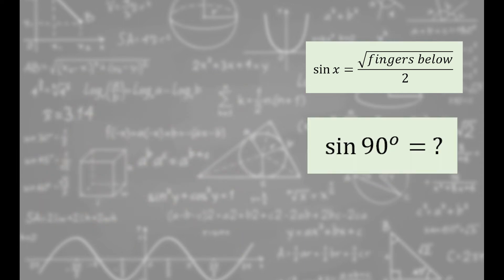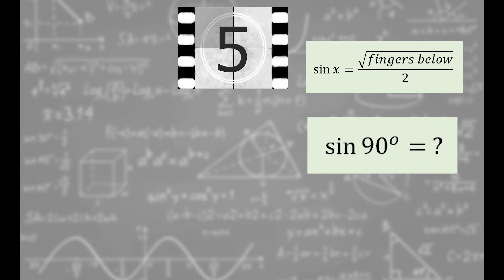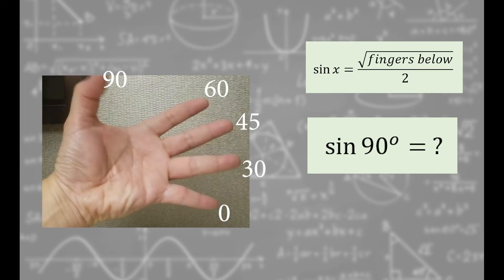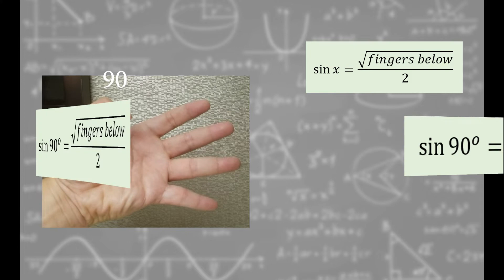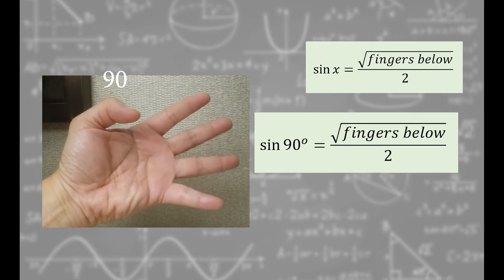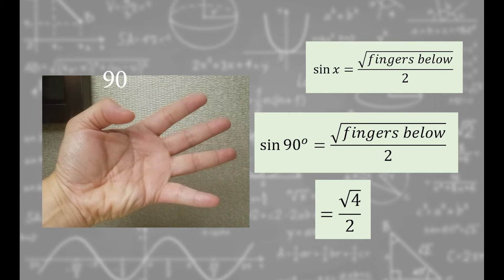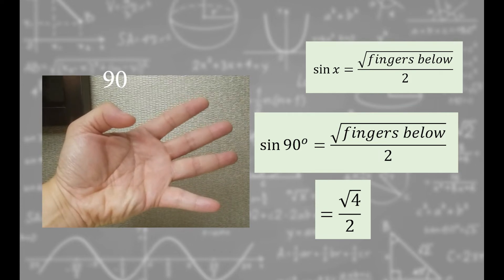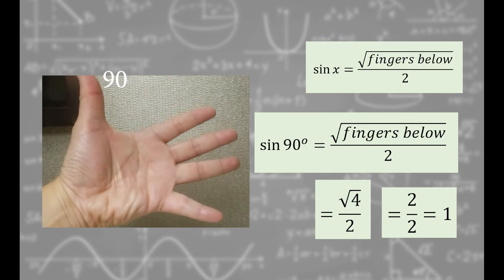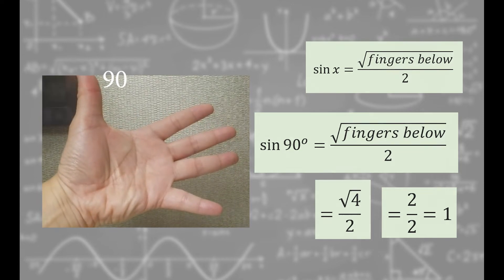Now do sine 90 degrees. Hit pause and try to figure it out first. 90 degrees is this finger. Bend it in and get it out of the way. All four fingers are below it. Sine 90 degrees is root of 4 over 2, which simplifies to 2 over 2 equals 1.